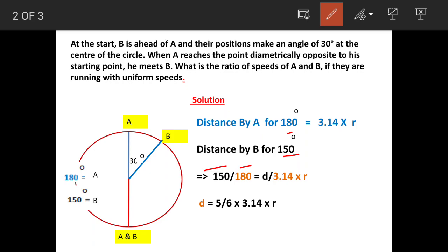Let's say this distance is D. So D upon distance covered by A for 180 degrees is this ratio. We put this up and we get value of D as 5 by 6 into 3.14 into R.